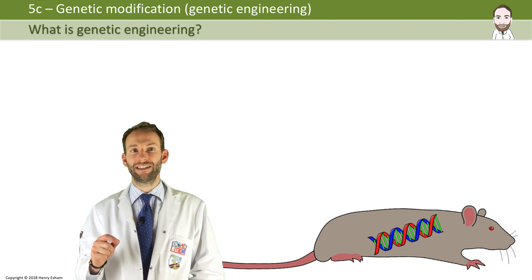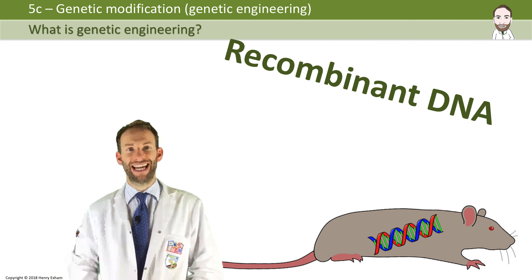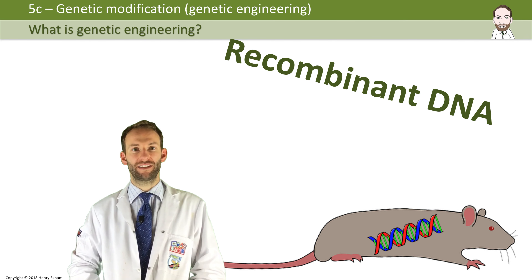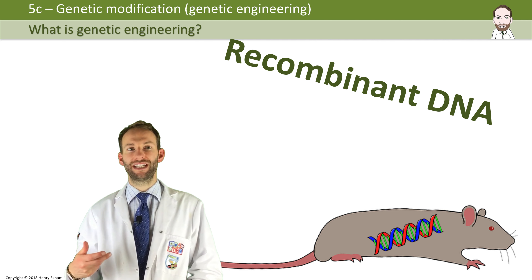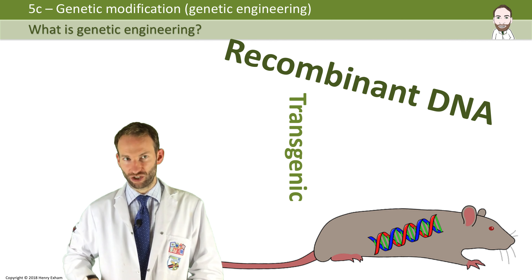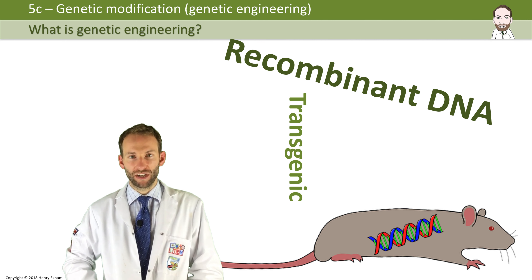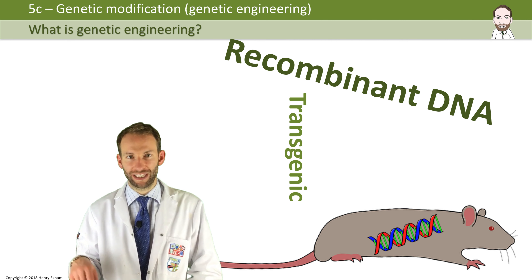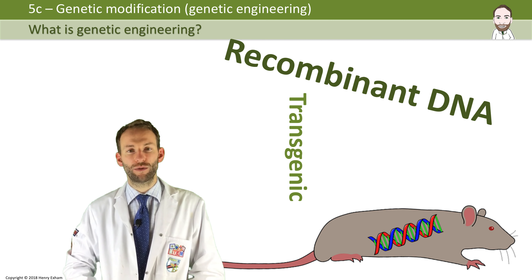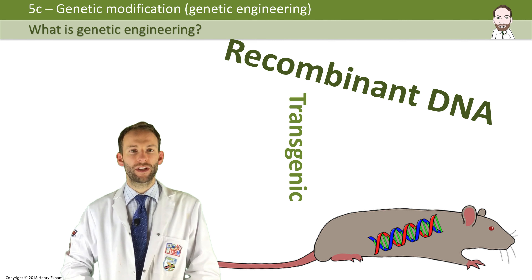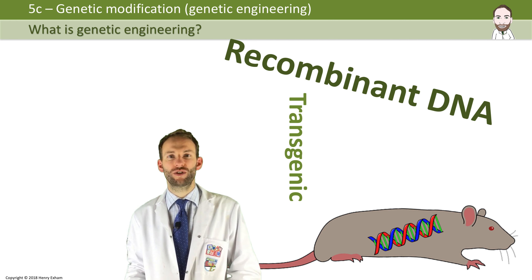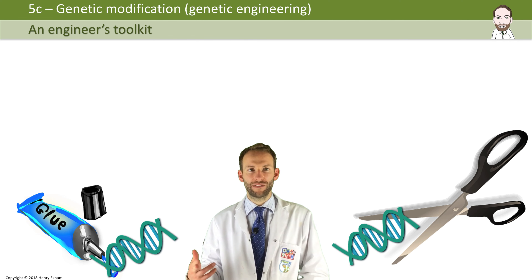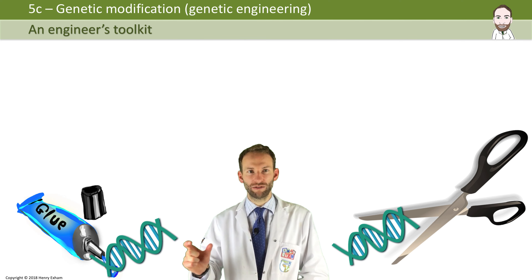It has some incredible applications and possibilities for the future. A section of DNA — a gene — can be cut out of one species and inserted into another. This new DNA is called recombinant DNA because it has been recombined. The organism that receives this new recombinant DNA we refer to as a transgenic organism. The new organism will manufacture the protein using the DNA as if it was its own.